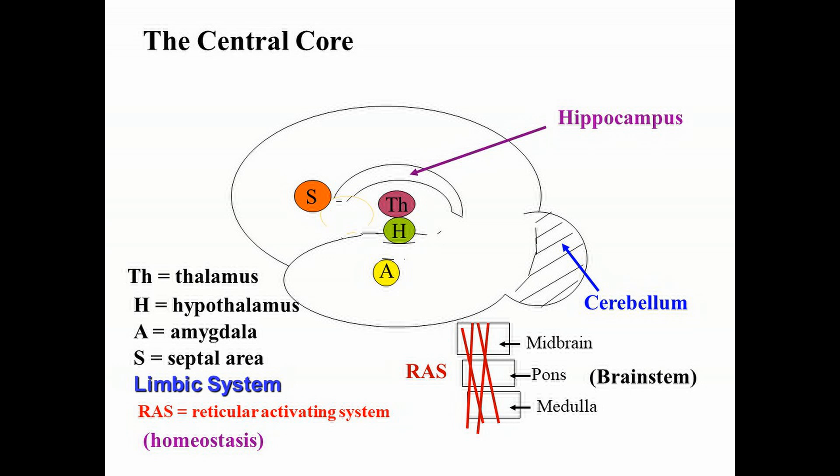Beneath the pons is the medulla, and this structure is absolutely essential for survival. If someone is hung by the neck till dead, death is the result of damage to the medulla. It controls our breathing, our heartbeat, and our blood pressure.